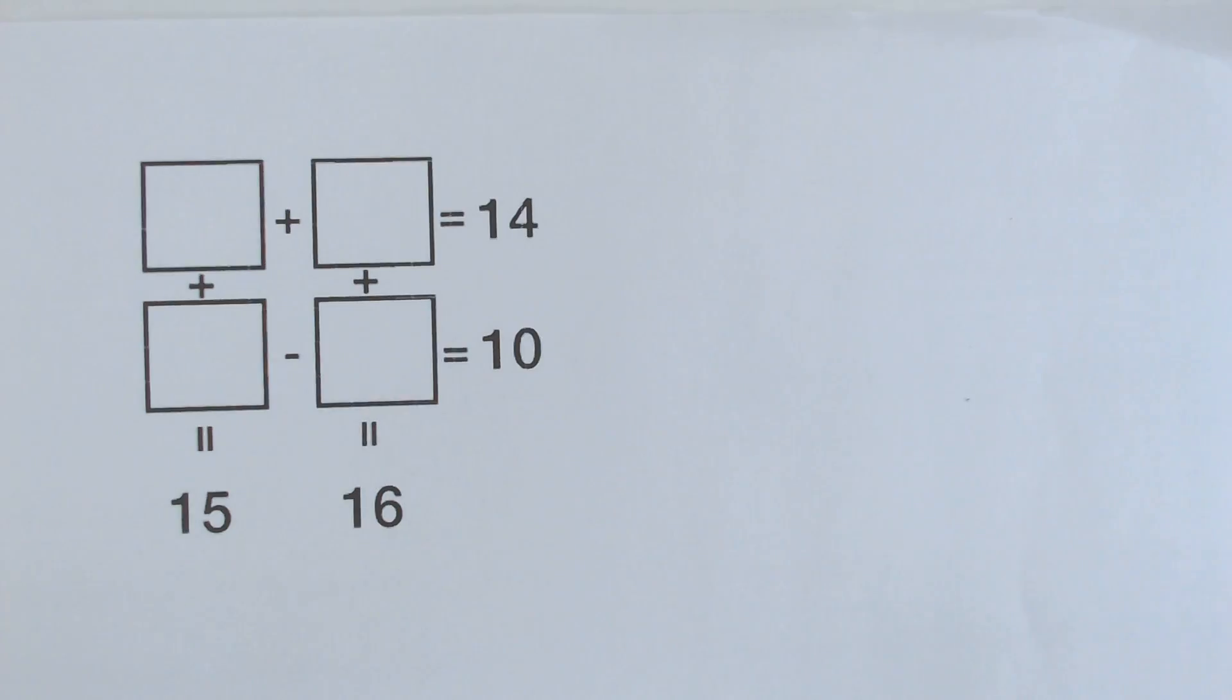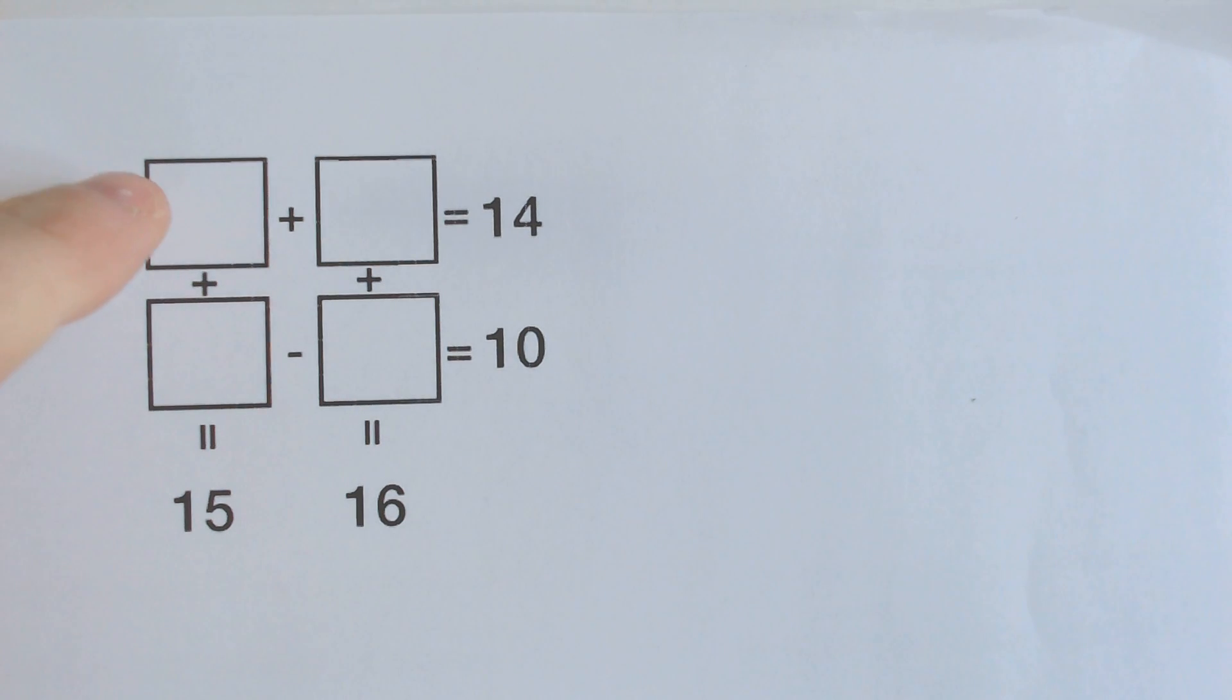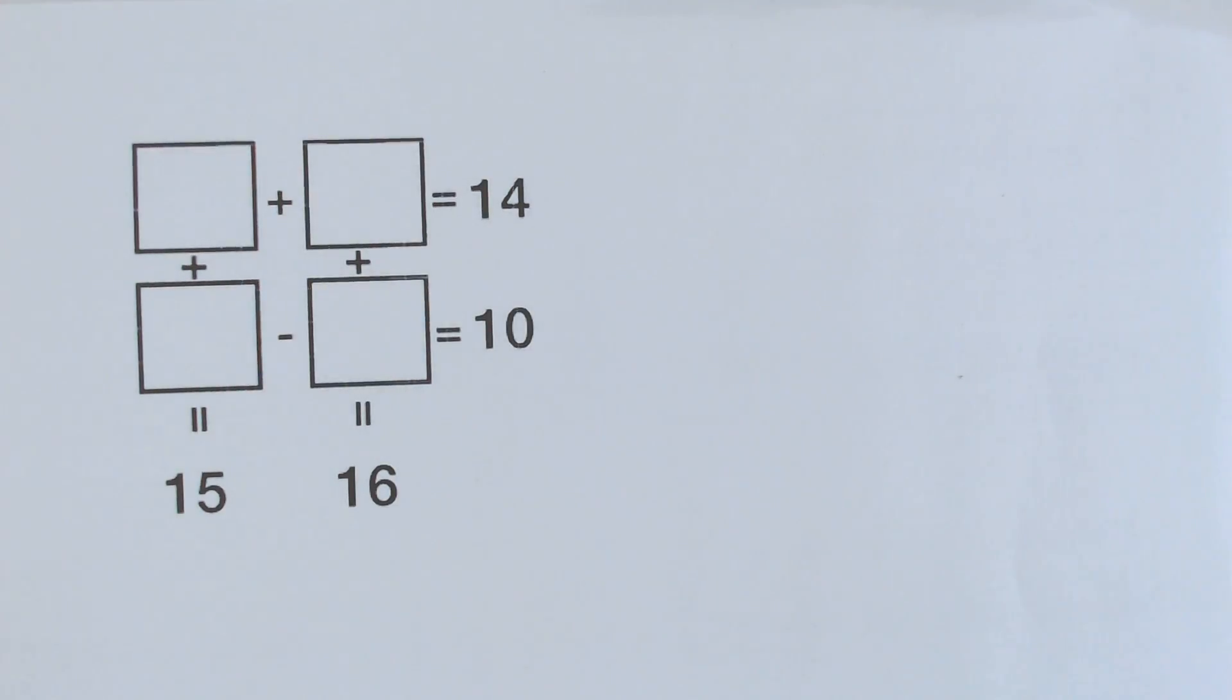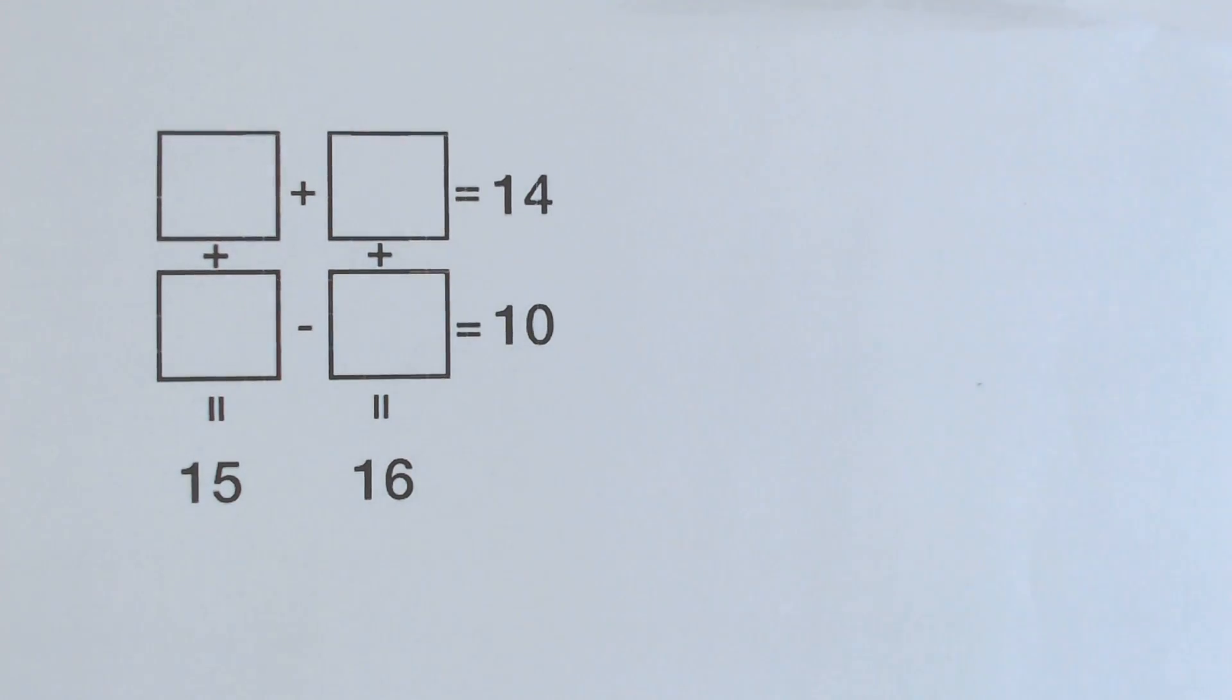So I encourage you to look at it. We got to figure out two numbers that add to 14, and then another two numbers, but one of them being the same that would add to 15, and then subtracting two numbers to equal 10 and adding down to equal 16. So I encourage you to maybe pause the video for a second to see if you could be one of the few people that can actually solve this thing.